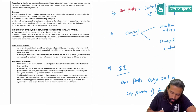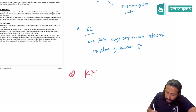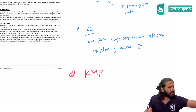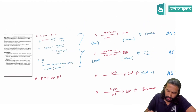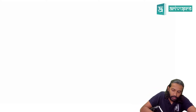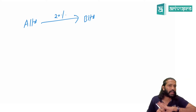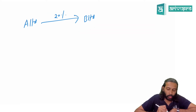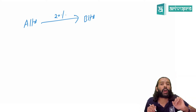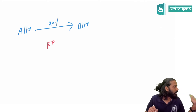Let me give some quick examples. Case 1: A Limited owns 20% equity shares of B Limited — are they related parties? Yes, because A Limited has significant influence over B Limited, so they become related parties. Case 2: Mr. A owns 20% equity shares of B Limited — are Mr. A and B Limited related parties? Yes, because even an individual can own shares in a company. If an individual owns 20% or more equity shares of a company, they are related parties.